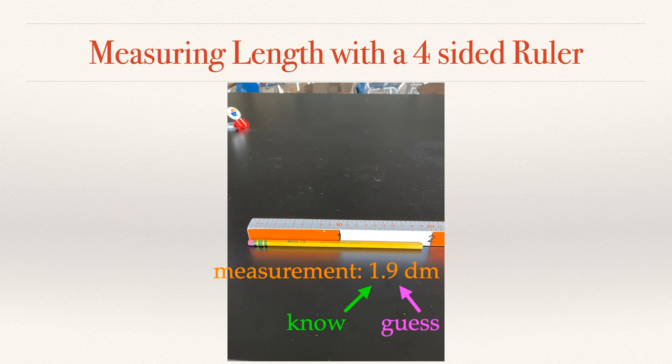So that last digit again is the estimated value. Another way of thinking about this is that what we know, the smallest sort of decimal place or place value that we know is what it's calibrated in. So as we see in the orange and the white there, each of those lines is worth one decimeter.